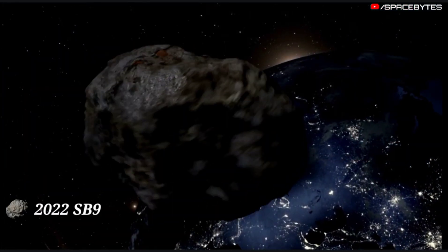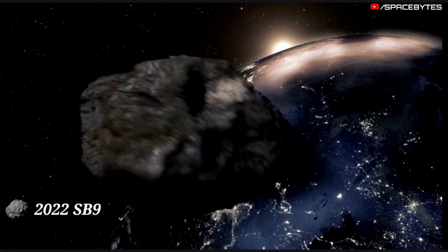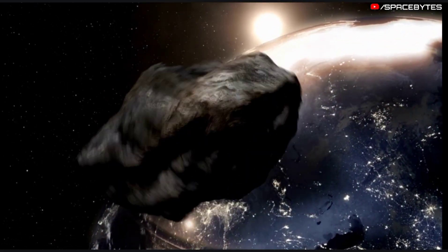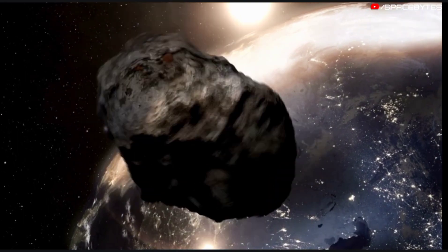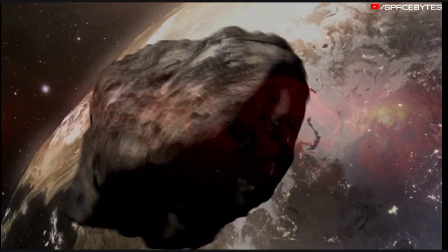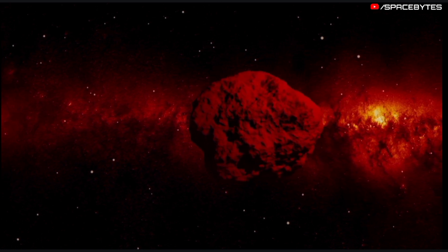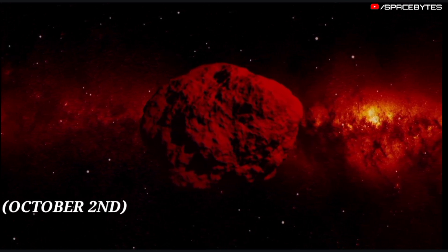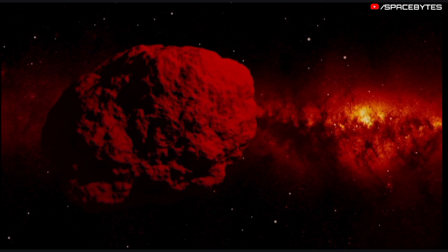According to NASA, asteroid 2022 SB9 is already on its way to the planet, traveling at a dizzying speed of 32,400 kilometers per hour. The asteroid will come closest to Earth on October 2, at a distance of only 2 million kilometers.